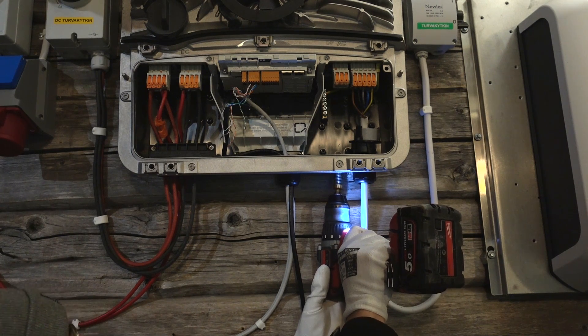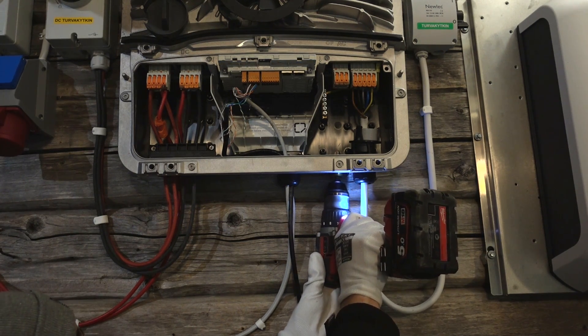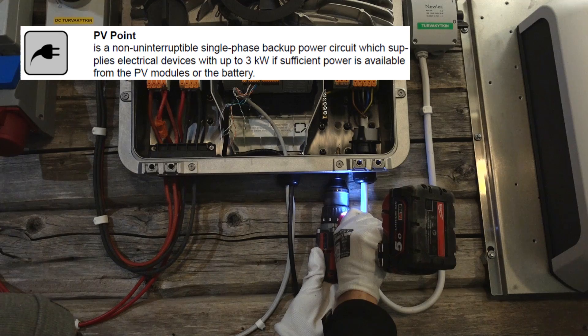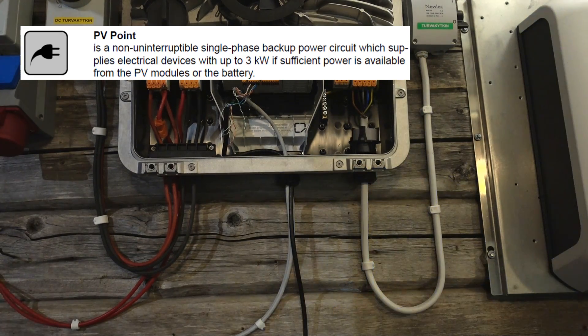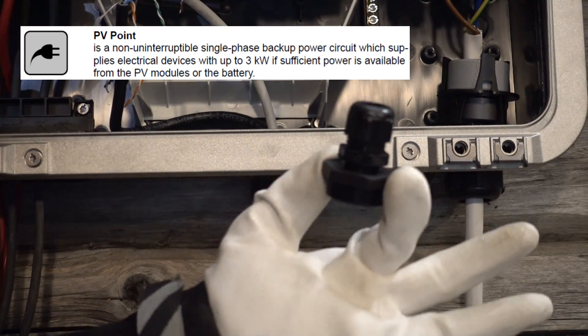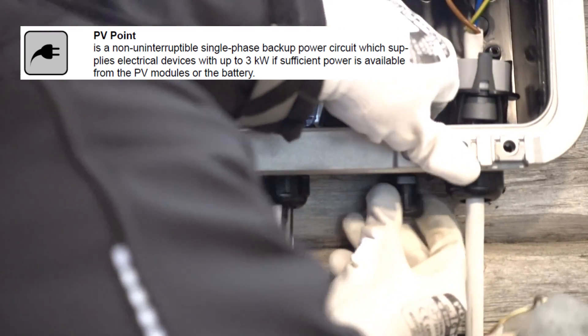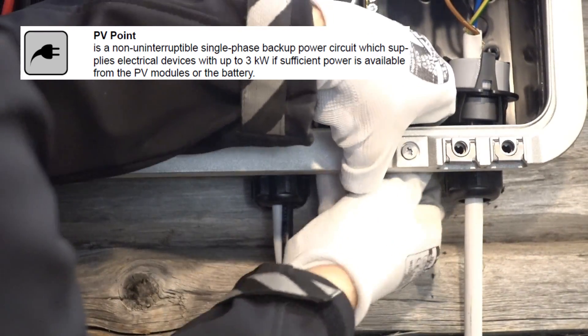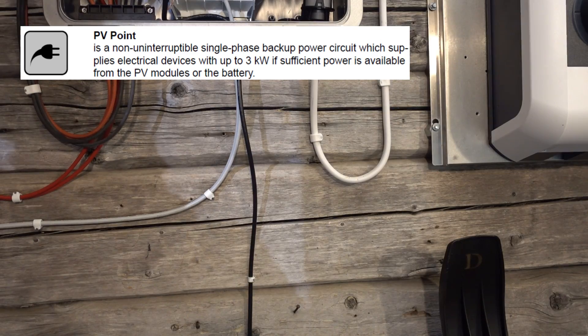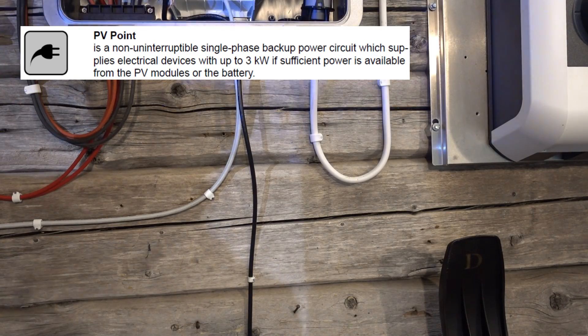Well, what is a PV point you may ask? According to the manual, the PV point outlet is a non-uninterruptible single-phase backup power circuit which supplies electrical devices with up to three kilowatts if sufficient power is available from the PV modules or the battery.